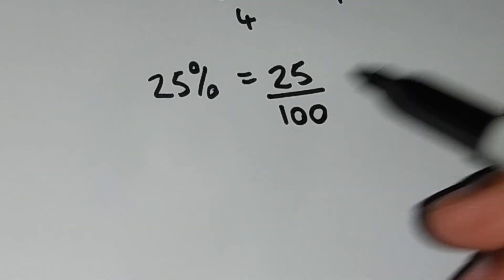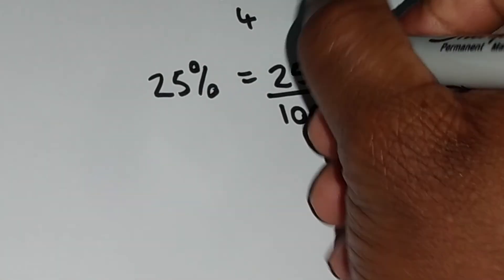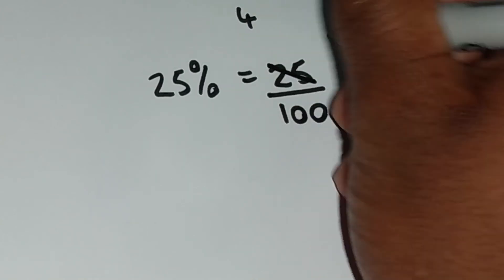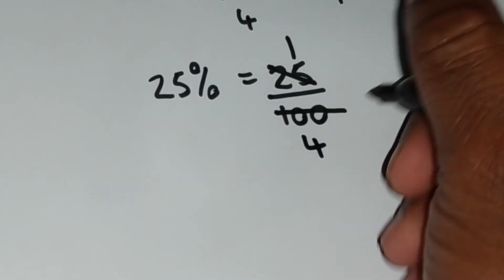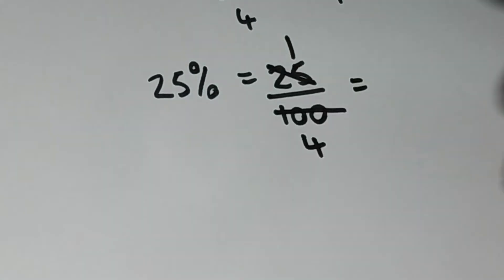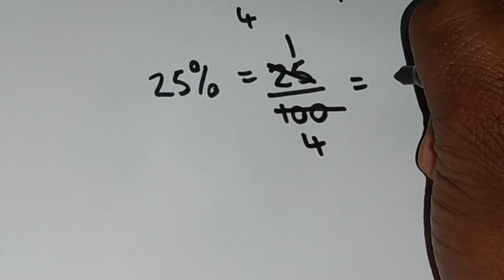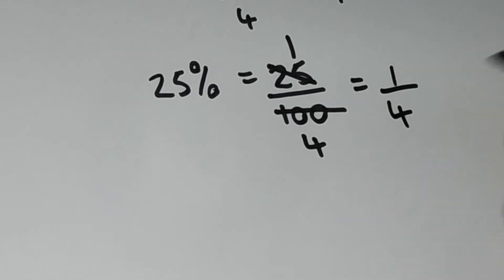So the highest common factor for 25 and 100 is actually 25. 25 into itself goes one time. 25 into 100 goes four times. So we can write 25% as a fraction in the form one out of four.